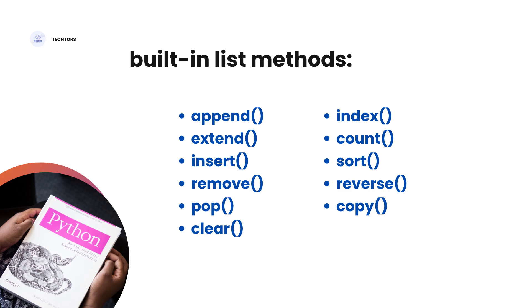If you look at this list, there are built-in list methods, or built-in functions. There are 11 predefined functions in Python for lists. We will use these to modify and perform operations on the list. Let's review these built-in methods later on — we will take a task on this.